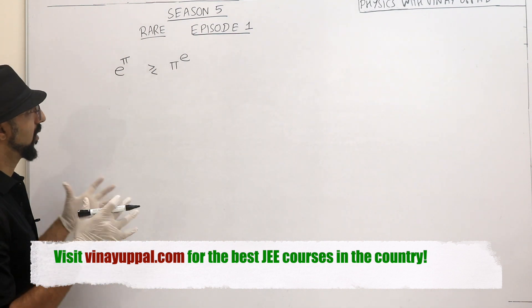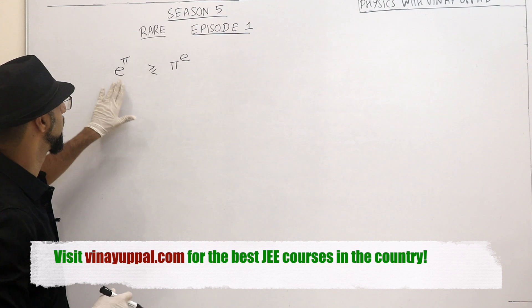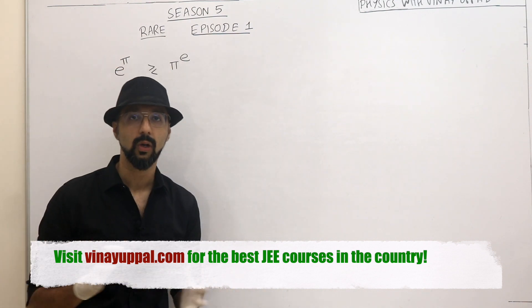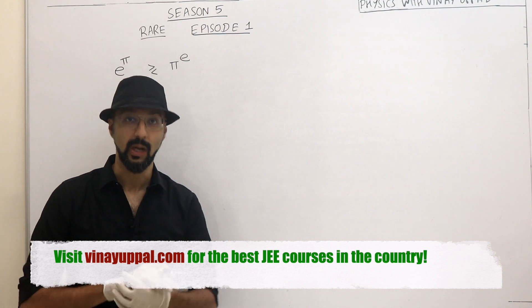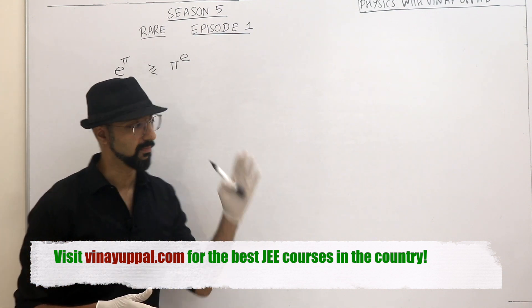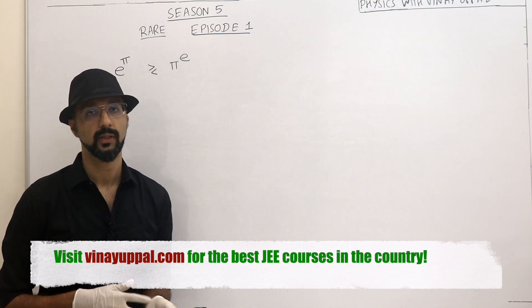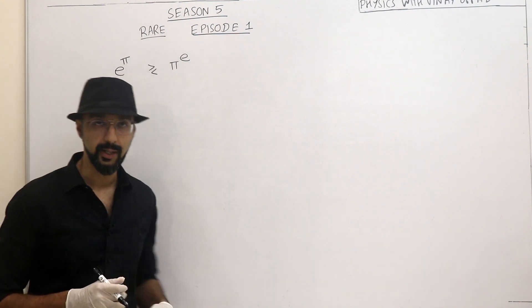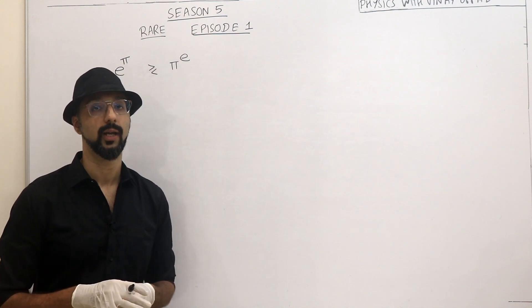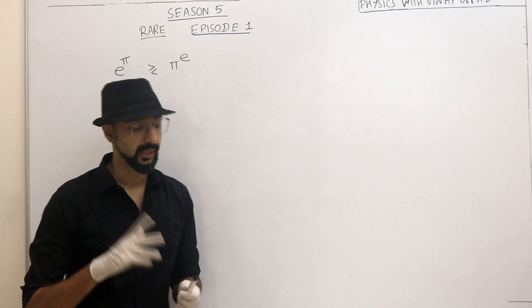So we are going to solve the classic maths problem. Which number is bigger? e raised to pi or pi raised to e? Obviously we can do it with a calculator, but we are going to try and find this out without using a calculator and with a very unique solution. There are many mathematical solutions for this problem, but we are going to use a very unique approach. And we are going to use a little bit of physics in order to solve this maths problem. So let's take a look at how to do it.